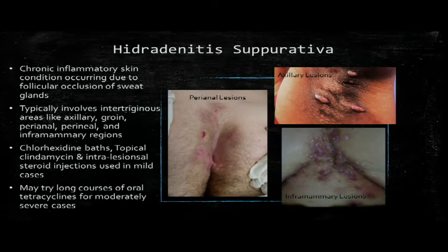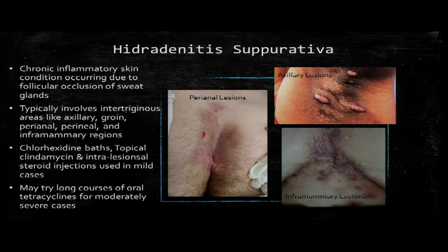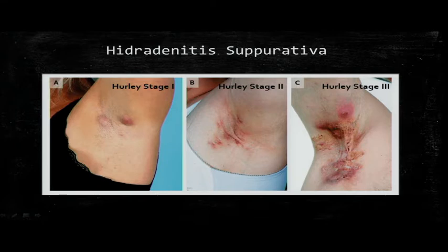Hidradenitis suppurativa, also known as acne inversa or Verneuil's disease, is a chronic inflammatory skin condition involving the intertriginous areas due to follicular occlusion of the sweat glands. It affects women more than men and usually begins in adolescents and young adults. It starts as inflamed nodules that transform to abscesses and then draining sinus tracts that are extremely painful. It's often misdiagnosed as recurrent furunculosis or boils. Smoking and obesity are risk factors. For mild disease, try chlorhexidine baths and topical clindamycin; if not responding, try long courses of oral tetracyclines. The Hurley staging system includes Stage 1 with inflammatory nodules, Stage 2 with recurrent abscesses and sinus tracts, and Stage 3 with recurrent abscesses and interconnected sinus tracts.